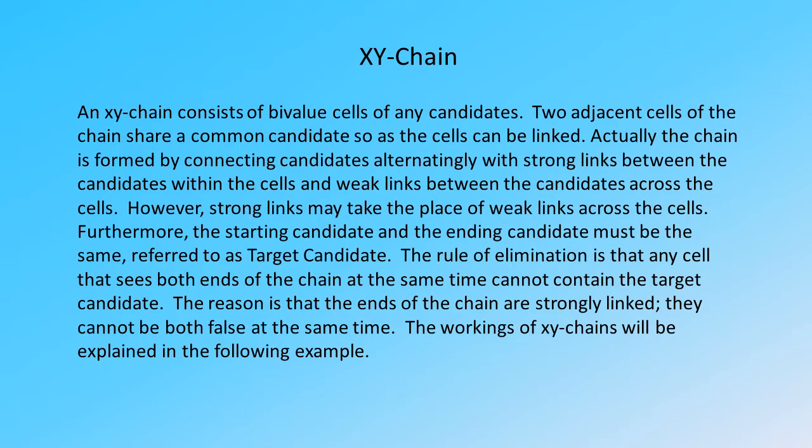The rule of elimination is that any cell that sees both ends of the chain at the same time cannot contain the target candidate. The reason is that the ends of the chain are strongly linked — they cannot both be false at the same time. The workings of XY chains will be explained in the following example.